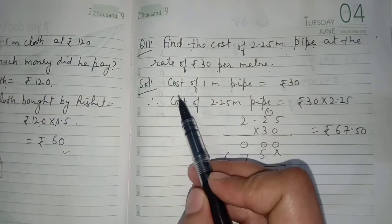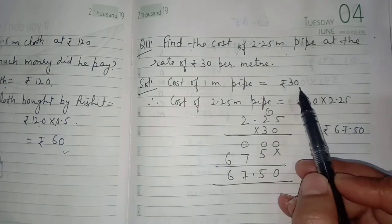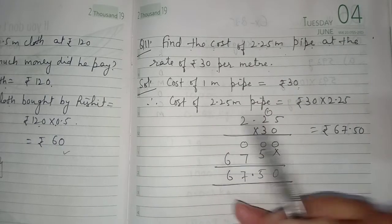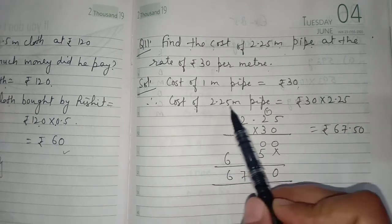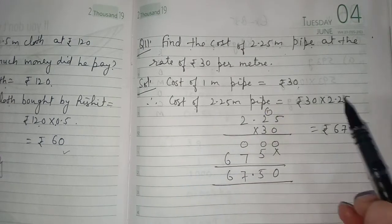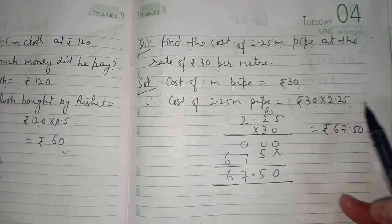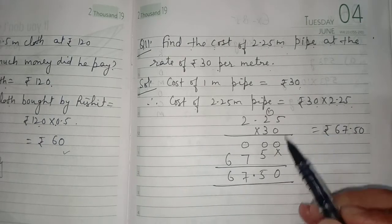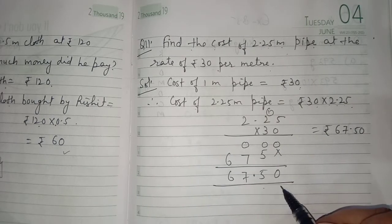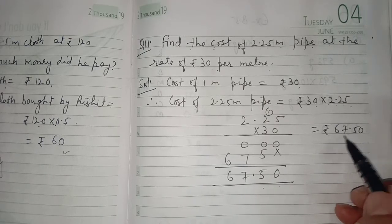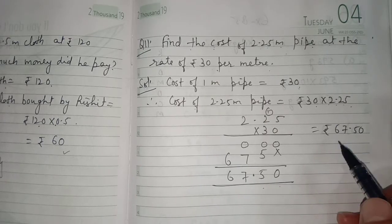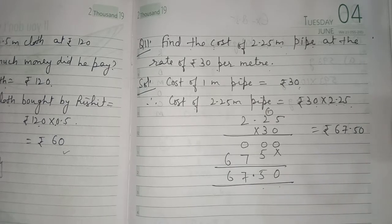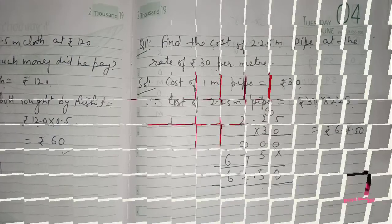Cost of 1 meter pipe is rupees 30, so cost of 2.25 meter pipe = rupees 30 × 2.25. Multiplying 2.25 × 30 gives us 67.50. Since we are finding the cost, we write the rupees symbol: rupees 67.50 is the cost of 2.25 meter pipe. I hope you understood this exercise.